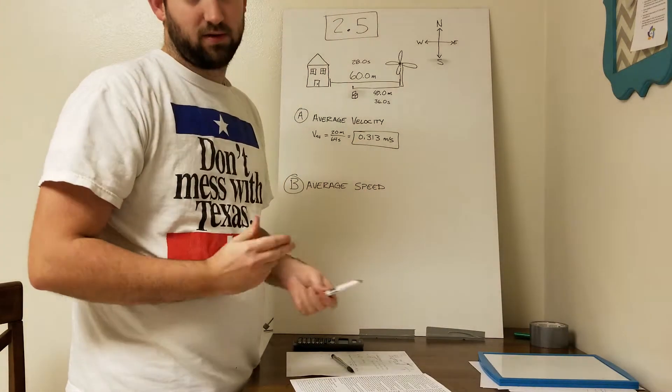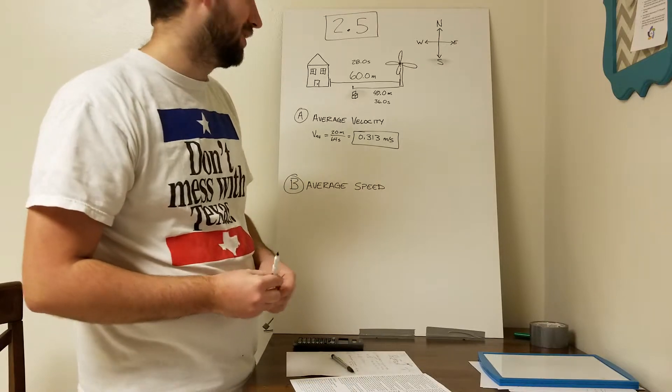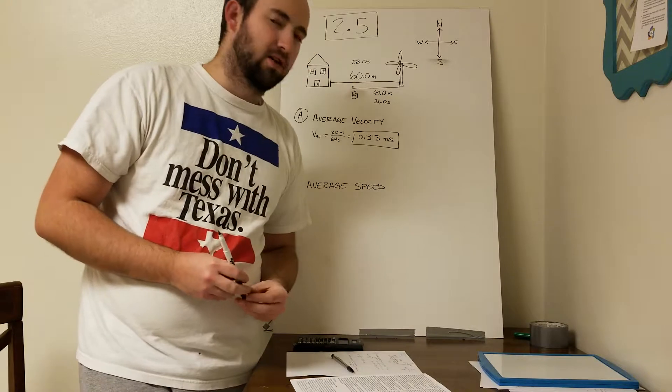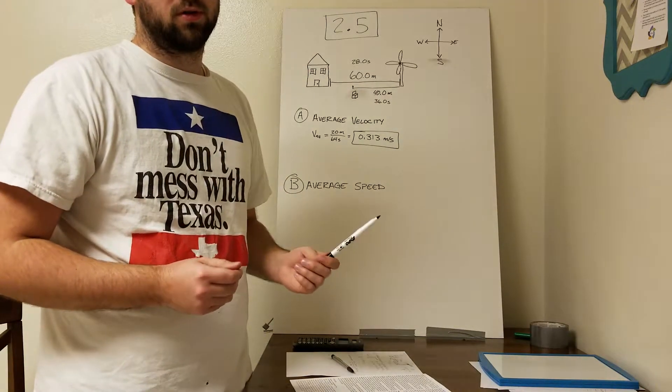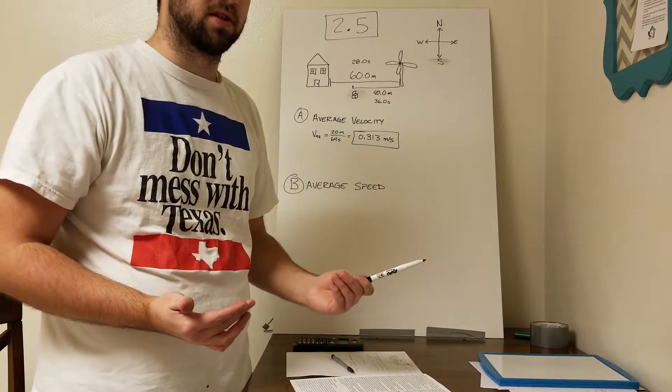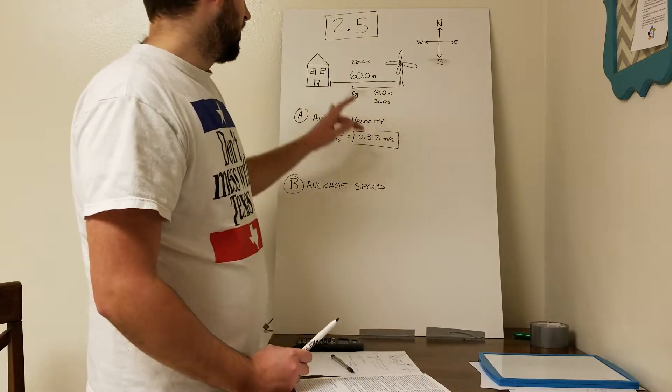That's all for part A. For part B now, we need to find the average speed. With speed, instead of using the displacement, we use the total distance that was traveled. We won't use the displacement this time.